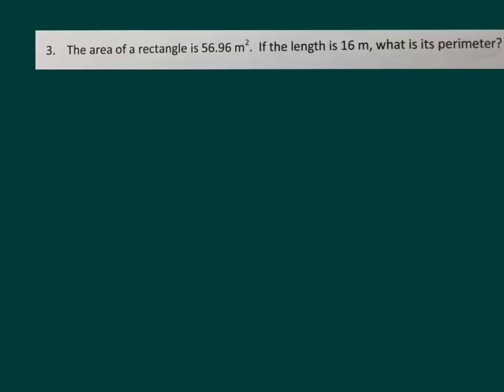The area of a rectangle is 56.96 square meters. If the length is 16 meters, what is the perimeter? It'll help to draw a rectangle where the length is 16 meters. The area is 56.96 square meters. It's a division problem. Take 56.96 and divide it by 16, because the formula for an area of a rectangle or square is length times width.